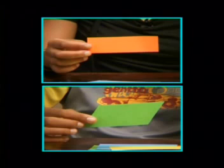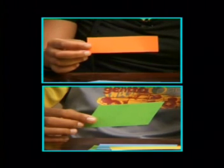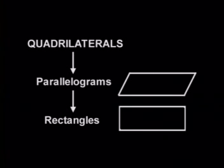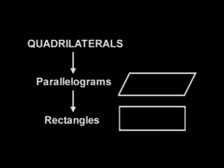For now, it's enough just to focus on the number of equal sides, the number of parallel sides and the number of equal angles. So we could describe a rectangle as a special type of parallelogram that has all its angles equal. Let me show you how we could represent this in a diagram. Within the family of quadrilaterals, there's a smaller group of parallelograms, and within that group of parallelograms, there is an even smaller group of rectangles.